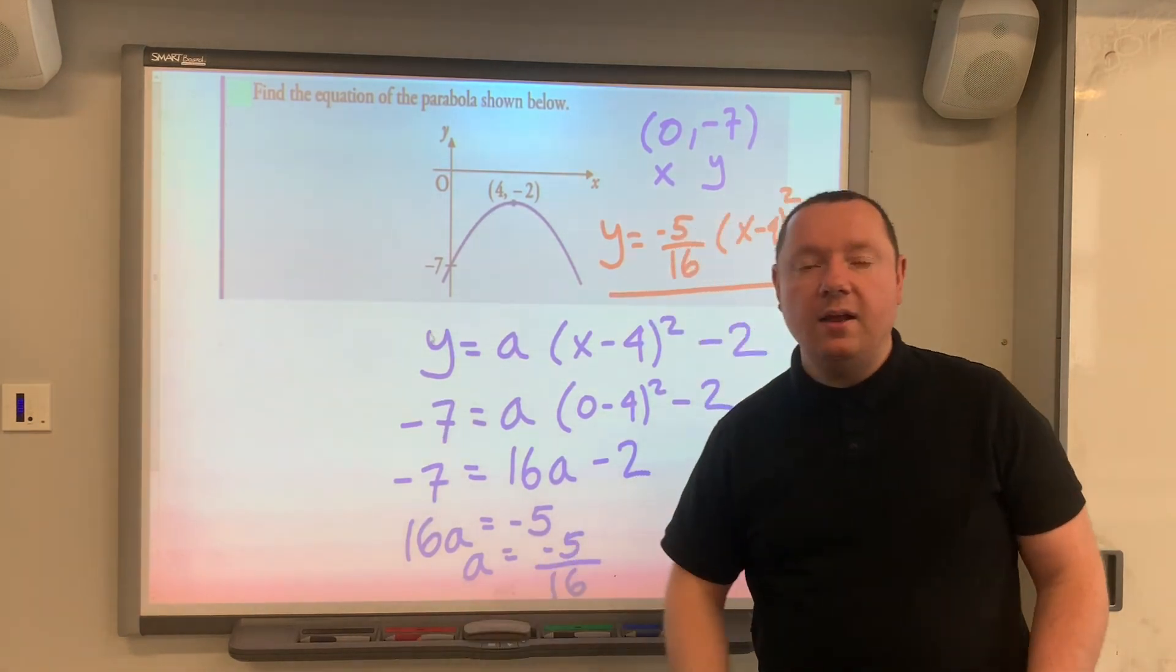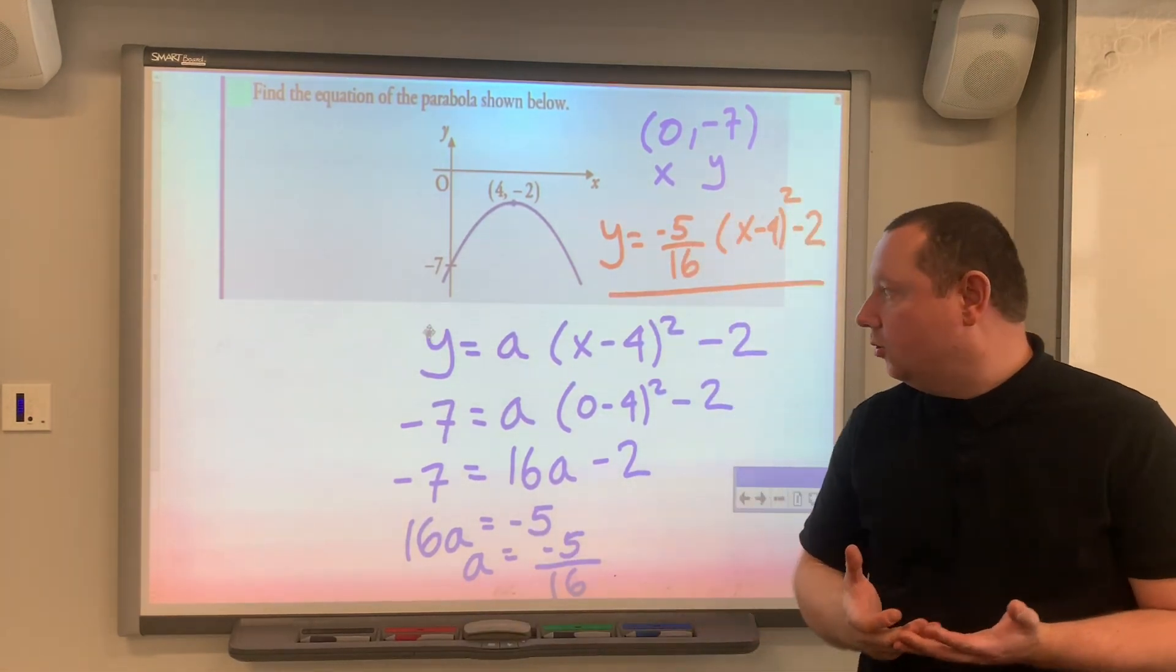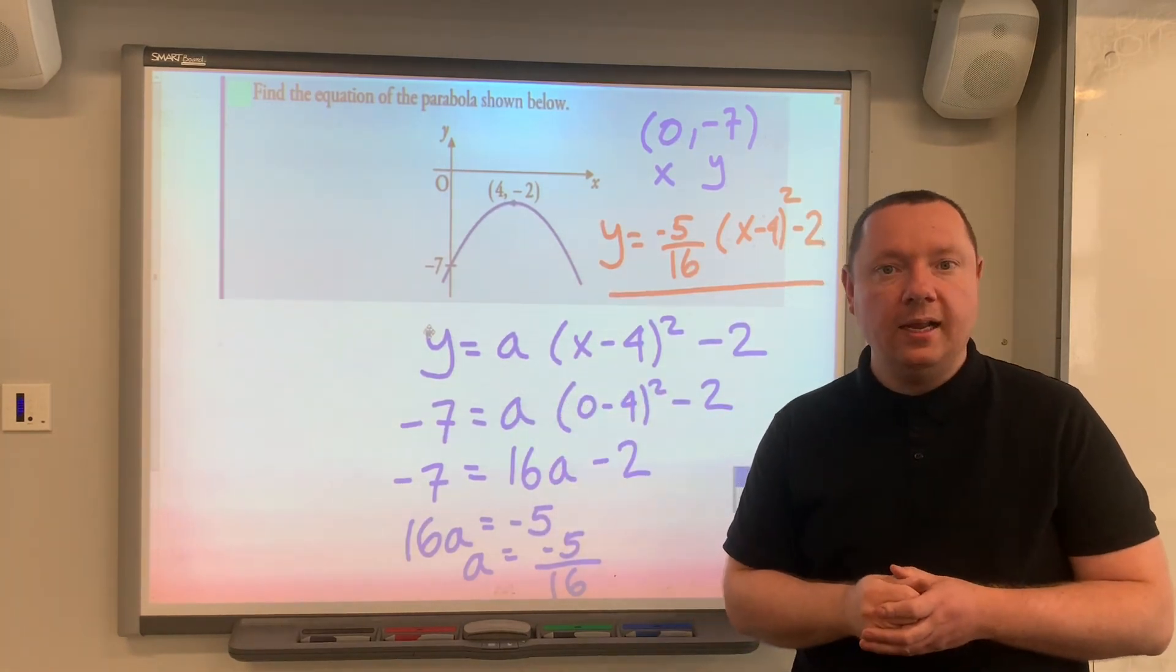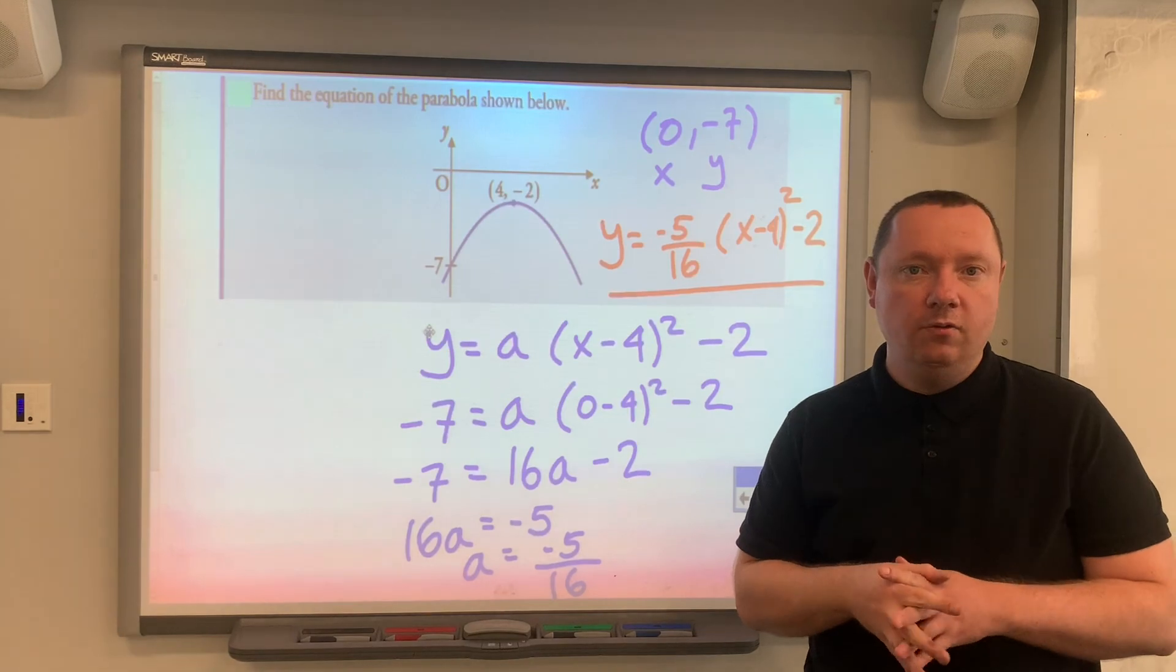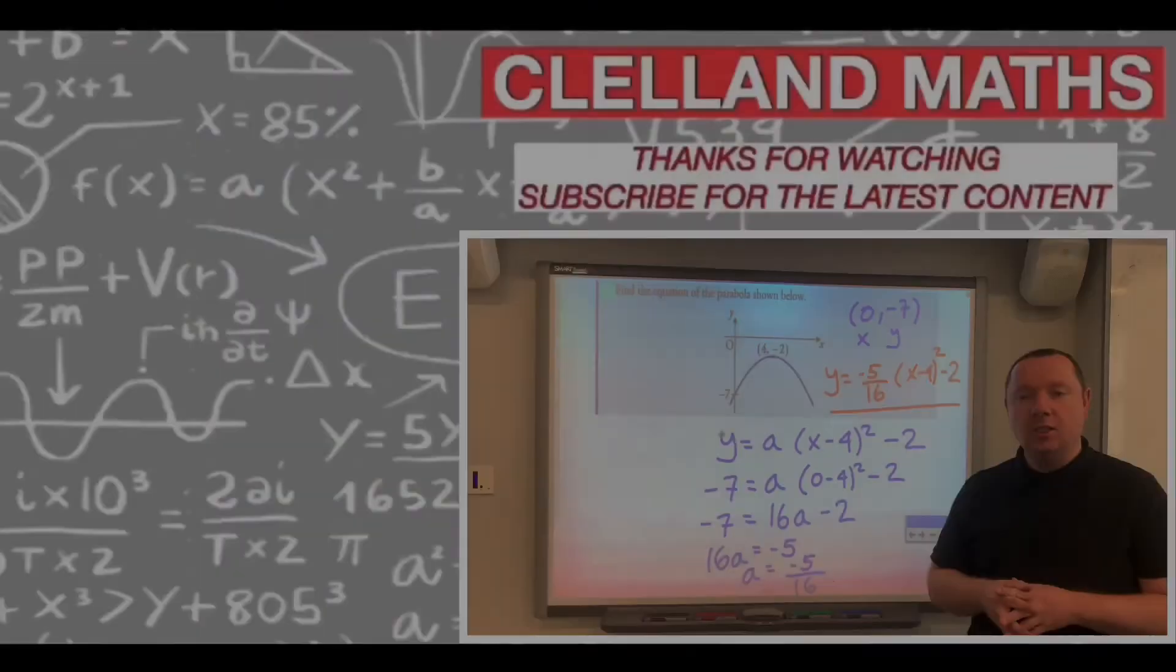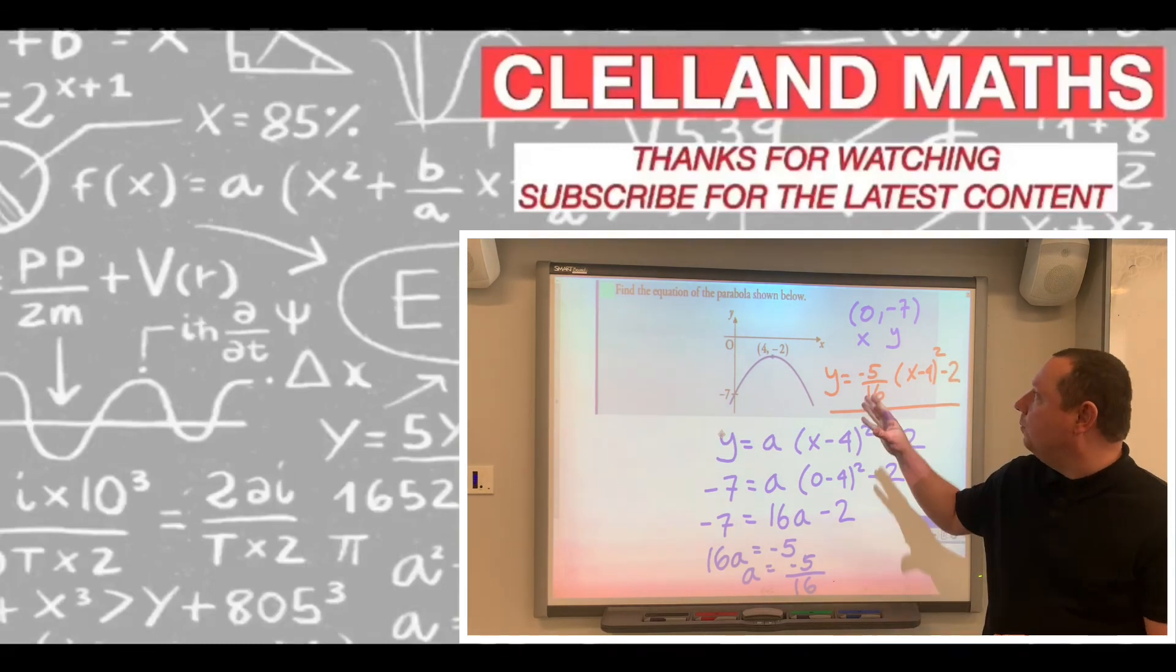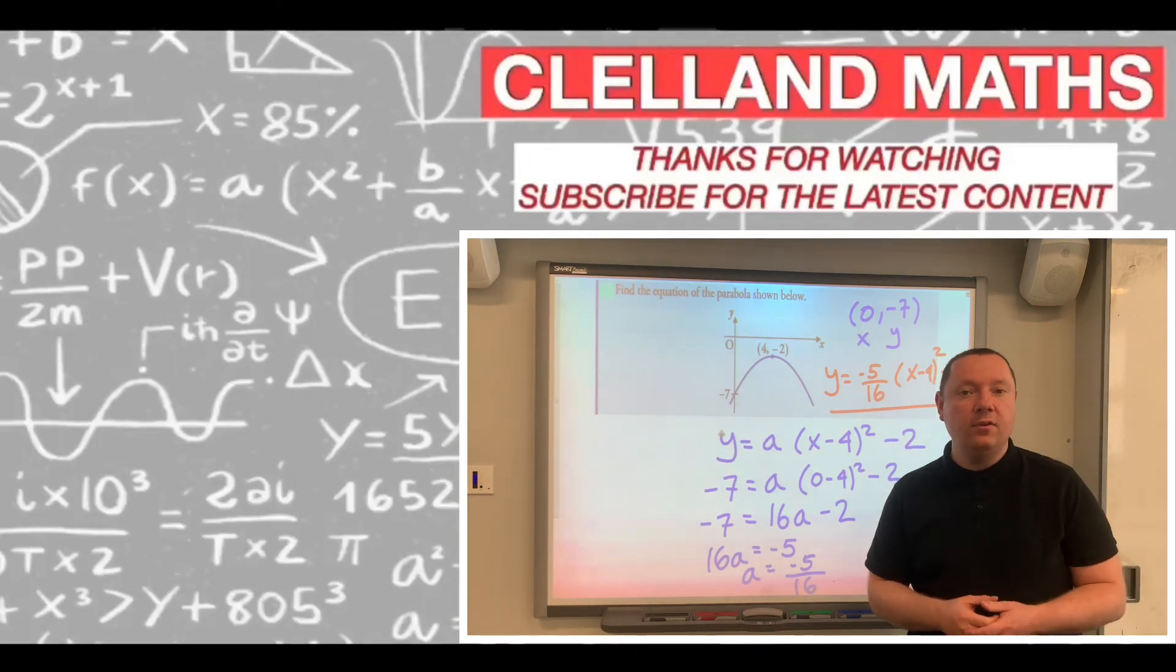Just remember that if you're given the turning point, you can always use completing the square with a coefficient outside of the bracket and find what that coefficient is. This has been Clown and Maths. Today we've been looking at how to determine the equation of a parabola given some points of the parabola.